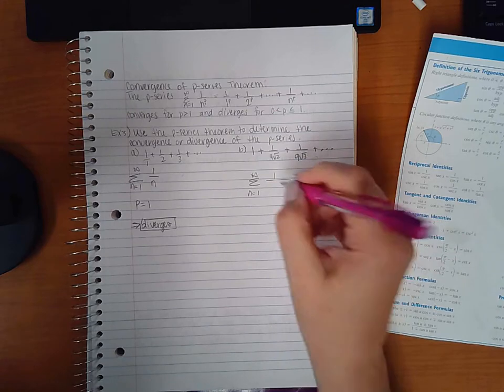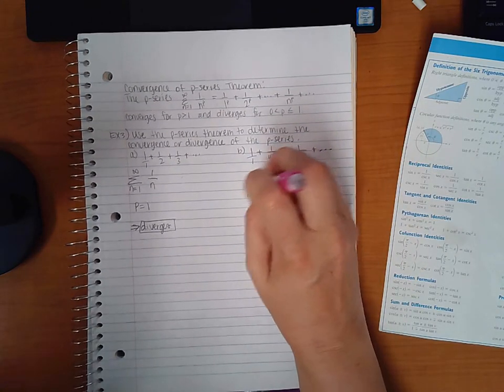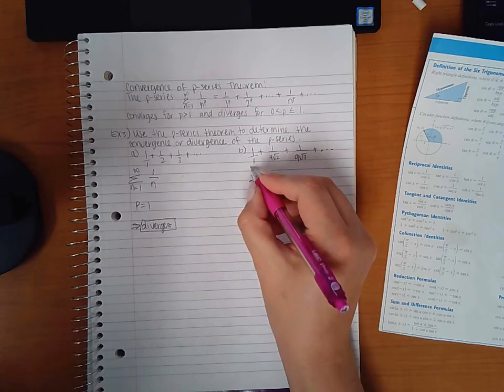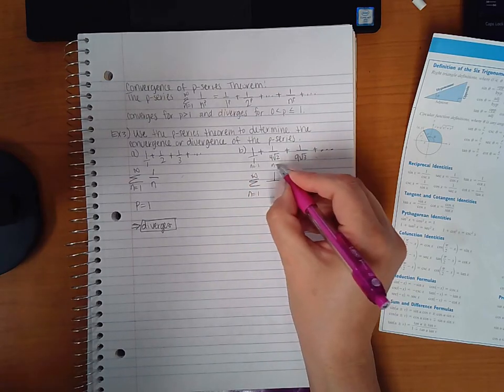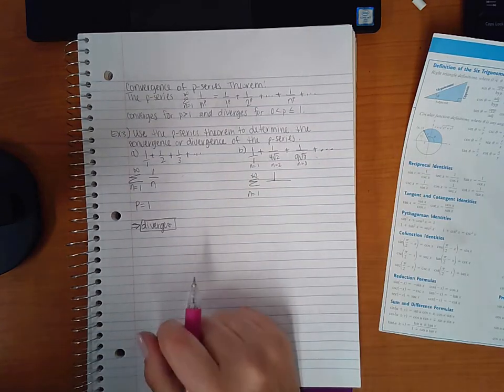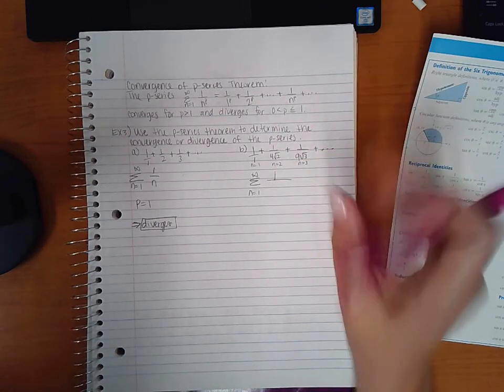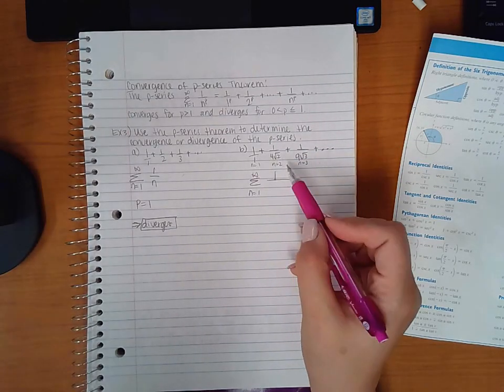I notice every single one of these has a one in the numerator. But notice that for n equals one, we get one; for n equals two, we get this; and for n equals three, we get this. According to the dot dot dot, it should be going to infinity. So what is happening with each of these values?